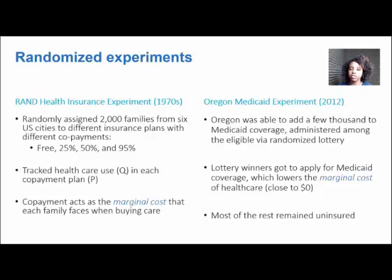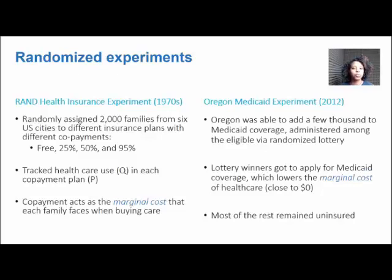More recently there was the Oregon Medicaid experiment. It wasn't intended to be an experiment at first. The state of Oregon came upon some money in their state budget and decided they could enroll about 10,000 new people onto Medicaid, but far more than that needed it. So the way they decided who would get it was through a randomized lottery — essentially around 100,000 people signed up and 10,000 lucky people would receive it. Researchers then studied those who received the lottery win and those who did not to compare their medical consumption.